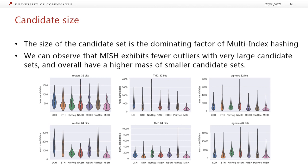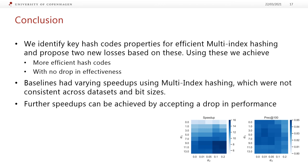To understand why MISH performs better than baselines in efficiency, we can look at the candidate set size, which is the dominating factor in multi-index hashing. MISH exhibits fewer outliers with very large candidate sets and generally has a higher mass of smaller candidate sets across datasets. To conclude, we identified key hash code properties for efficient multi-index hashing and proposed two new losses based on these, ensuring more efficient hash codes with no loss in effectiveness. Baselines show variable speedup using multi-index hashing that is inconsistent across datasets and bit sizes, whereas MISH is reliably better in all cases. Further speedup can be achieved by accepting a small drop in effectiveness, as detailed in the paper. Thank you for listening.